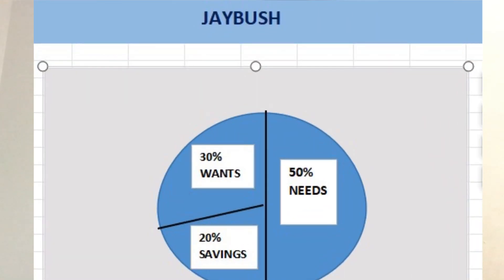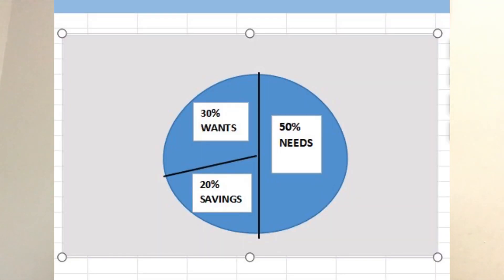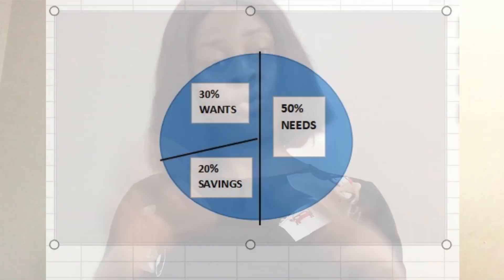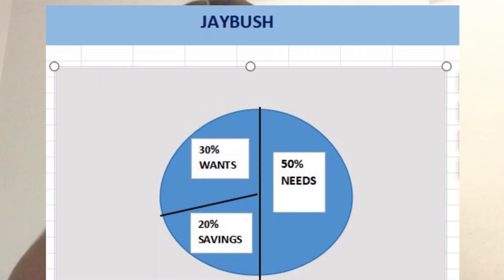Now we have 50% and 30% accounted for, which leaves 20%. That 20% is the savings we are talking about. Whatever you do, spare 20% and keep that as your savings every month. If you stick to the 50, 30, 20% rule, you wouldn't have a problem and you will keep saving your 20% every month.